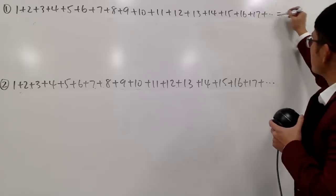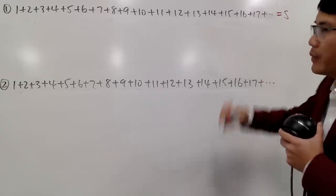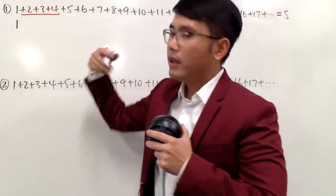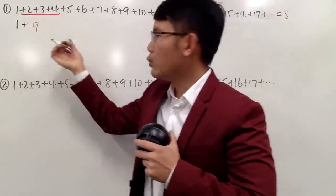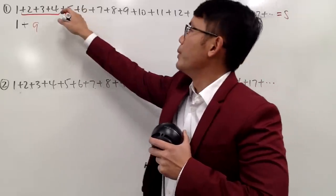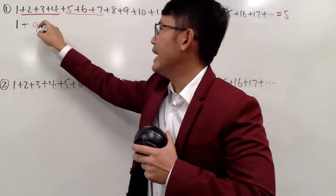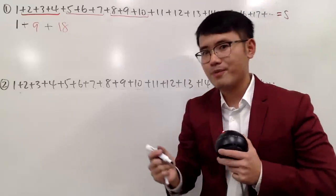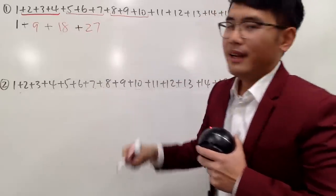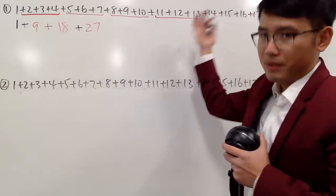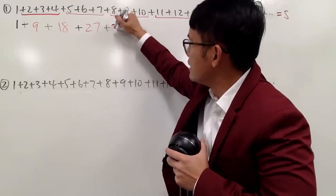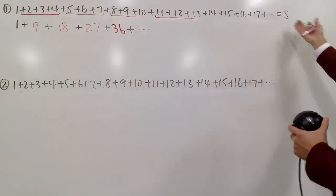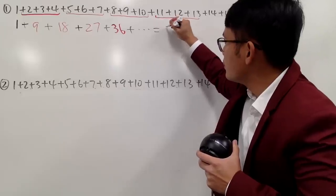First of all, we'll call this sum to be S. I will leave the 1 as it is, and then add up 2, 3, and 4 — that gives 9, so this is 1 plus 9. Then adding 5, 6, and 7 gives 18, so we have plus 18. Next, adding 8, 9, and 10 gives 27. And the next group gives 36, and so on. So this is still equal to S.